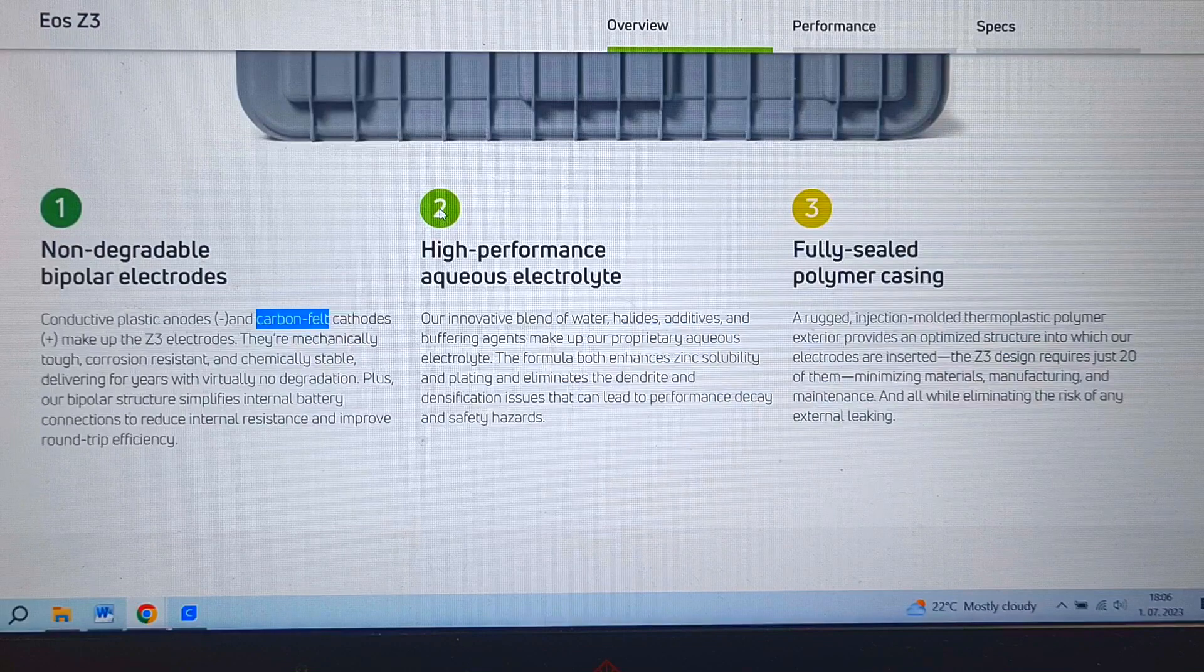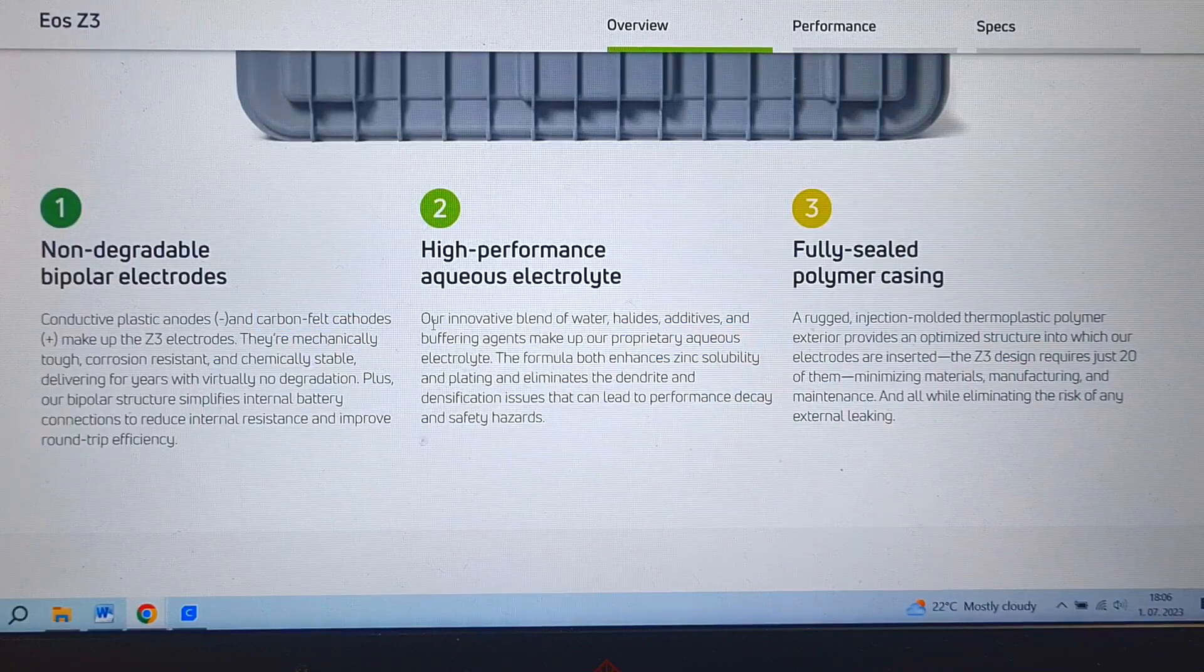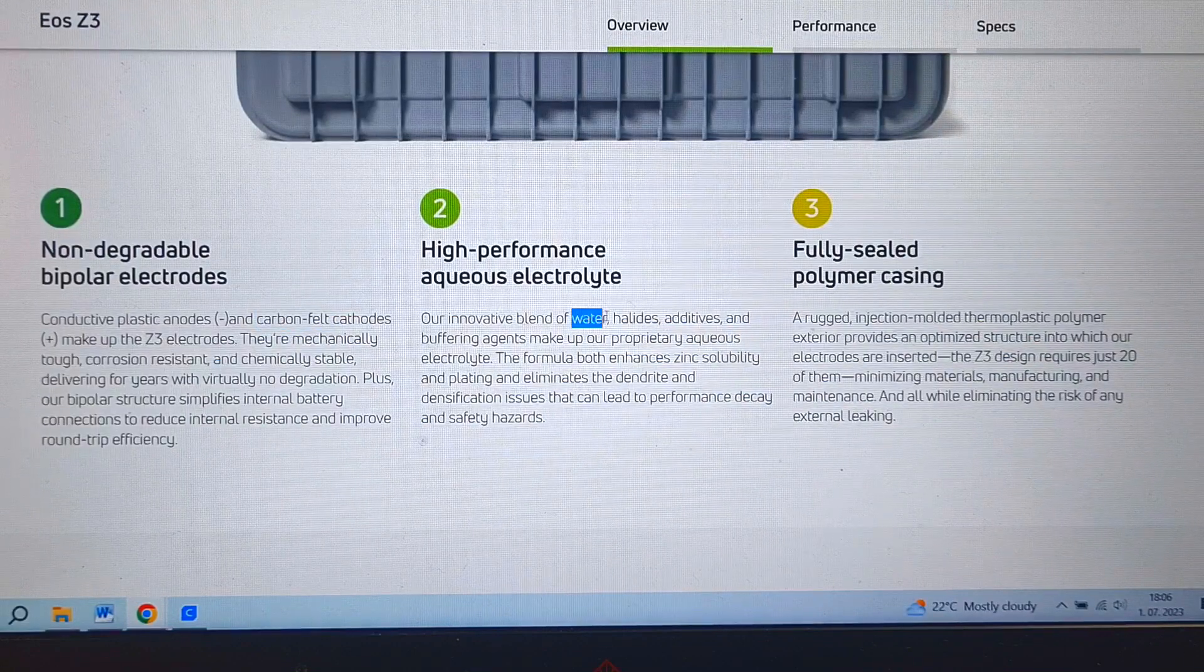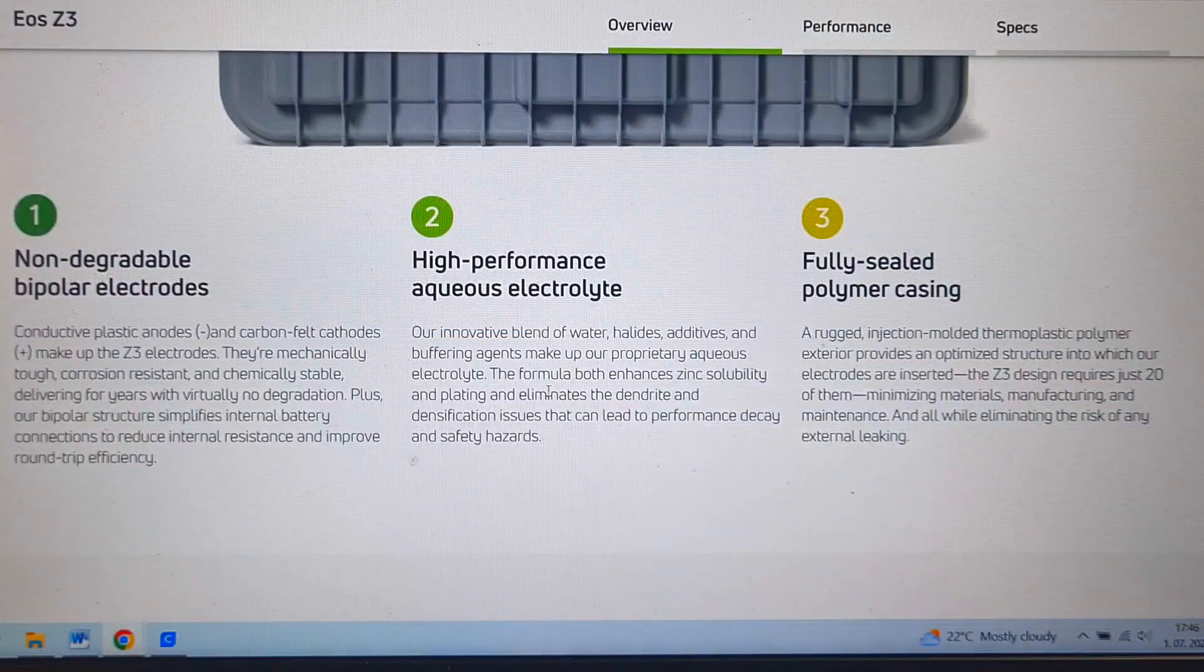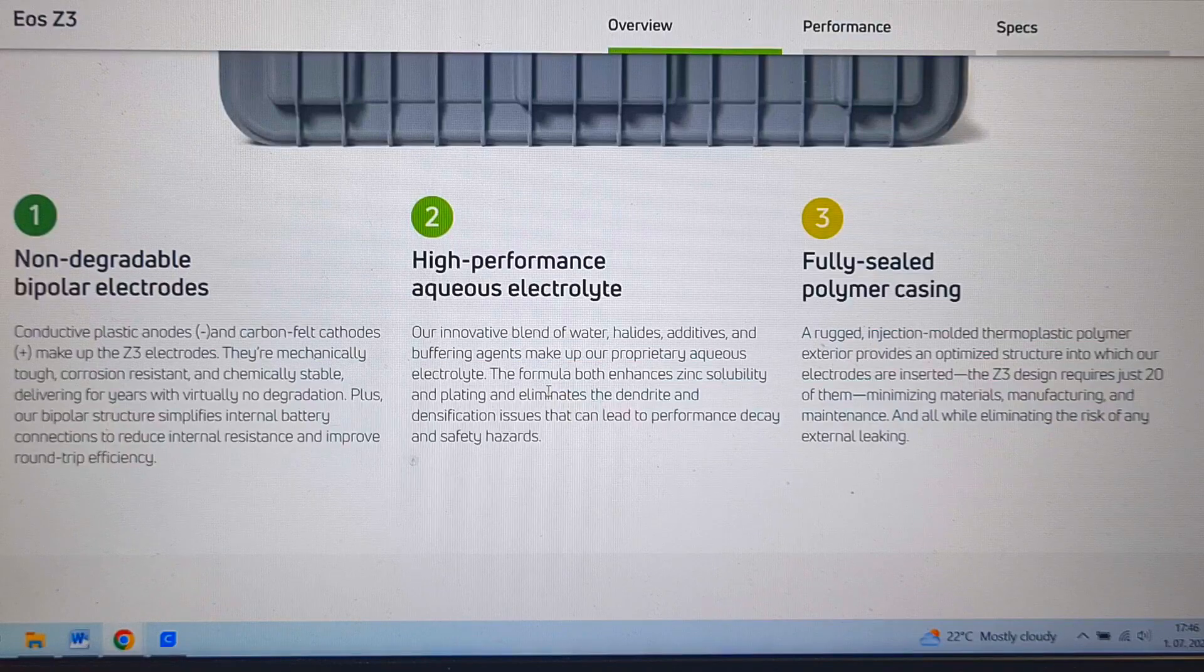And now the number 2 is of course the electrolyte. The electrolyte is made from water, halides, additives and buffering agents. Which means that the main electrolyte is made from zinc bromide solution.